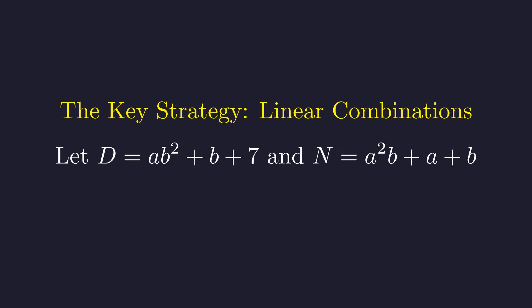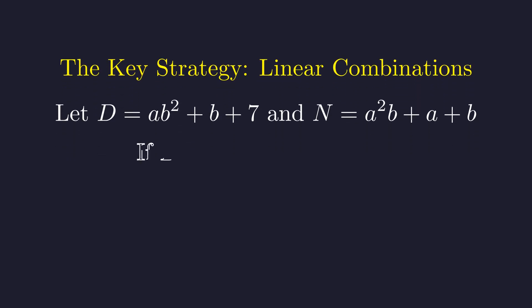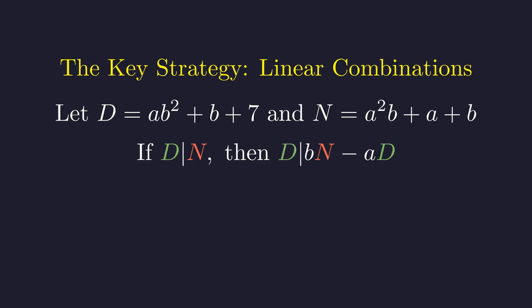Let d be the divisor and n be the dividend. The problem is now concisely stated as d divides n. Our goal is to choose a combination that simplifies the expressions. Observing the leading terms, we can eliminate the highest powers by constructing the specific combination b times n minus a times d. This choice of multipliers b and negative a is designed to make the a squared b squared terms cancel out upon subtraction.